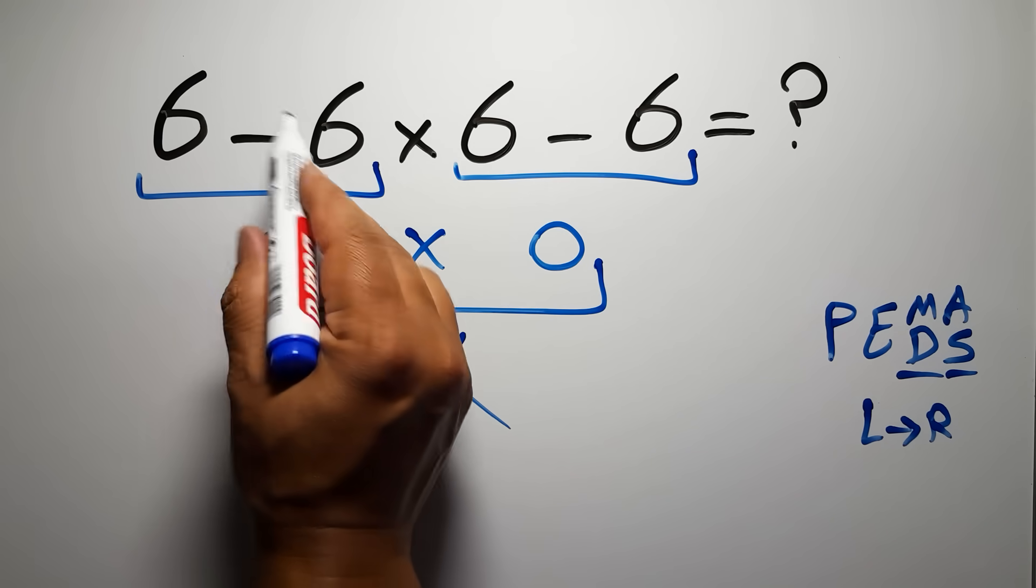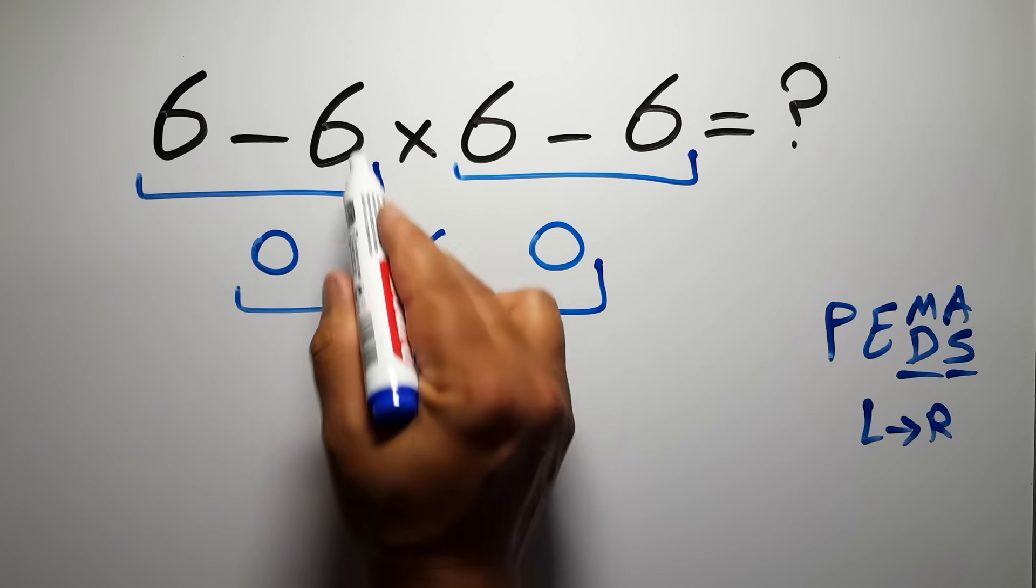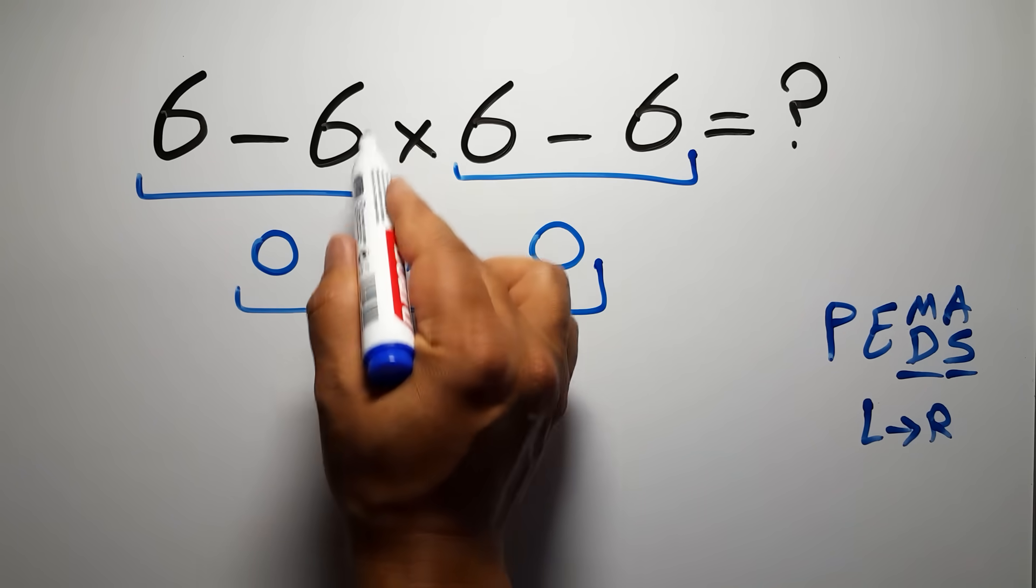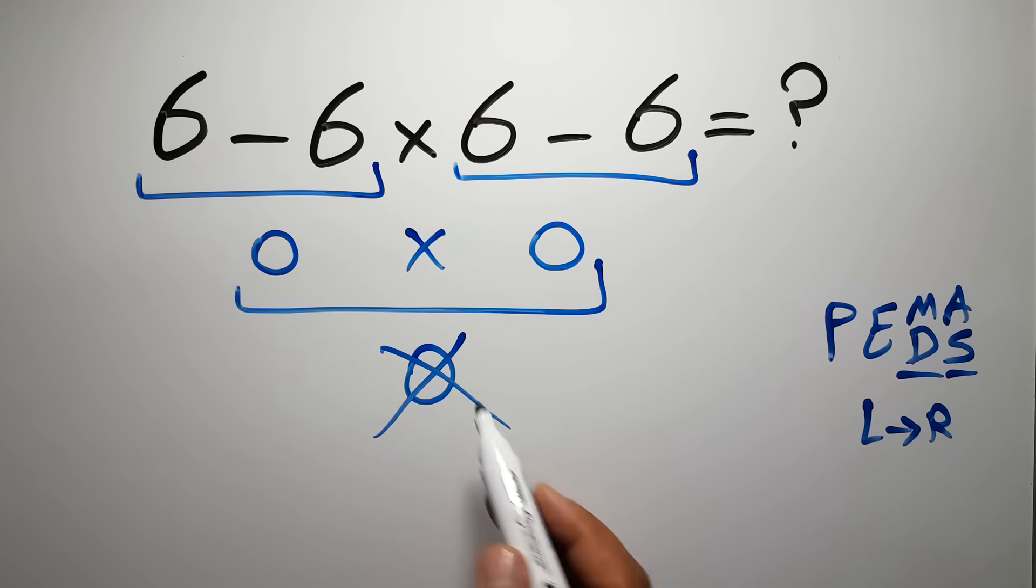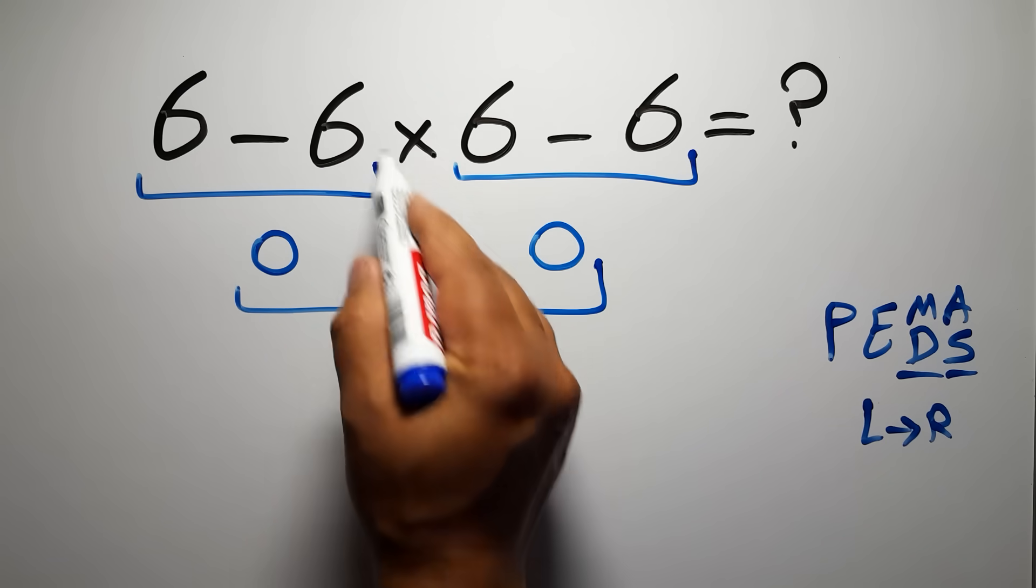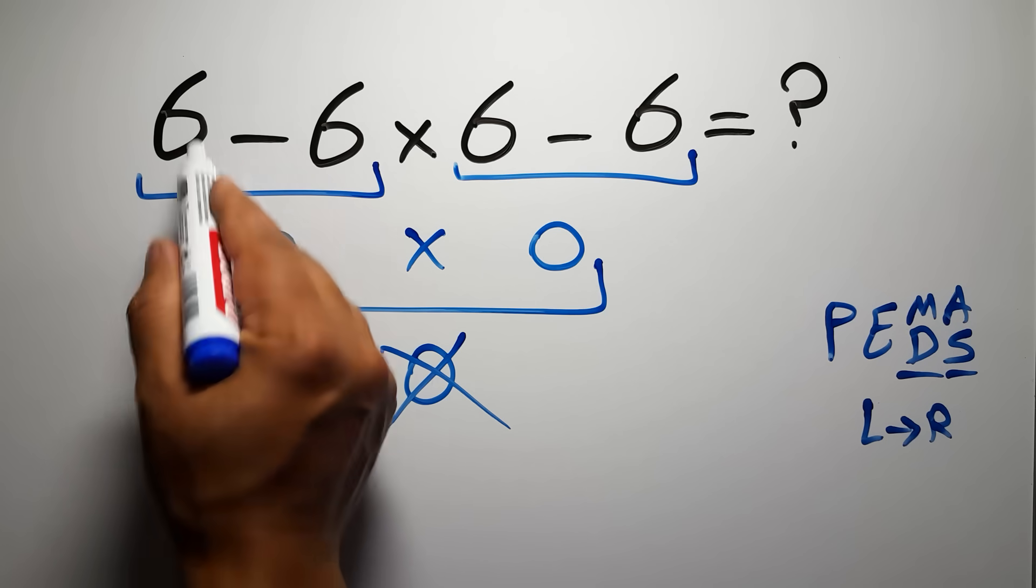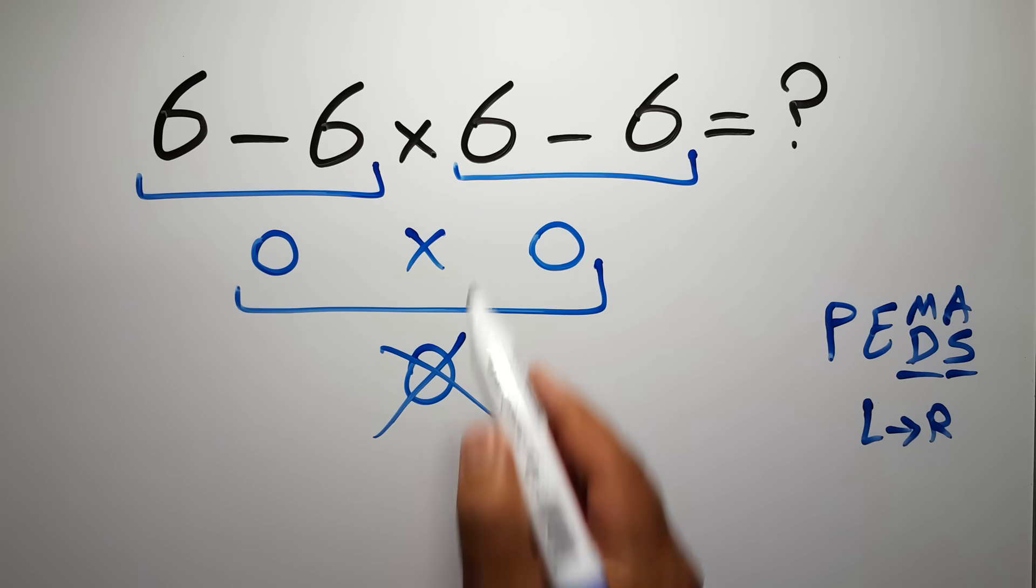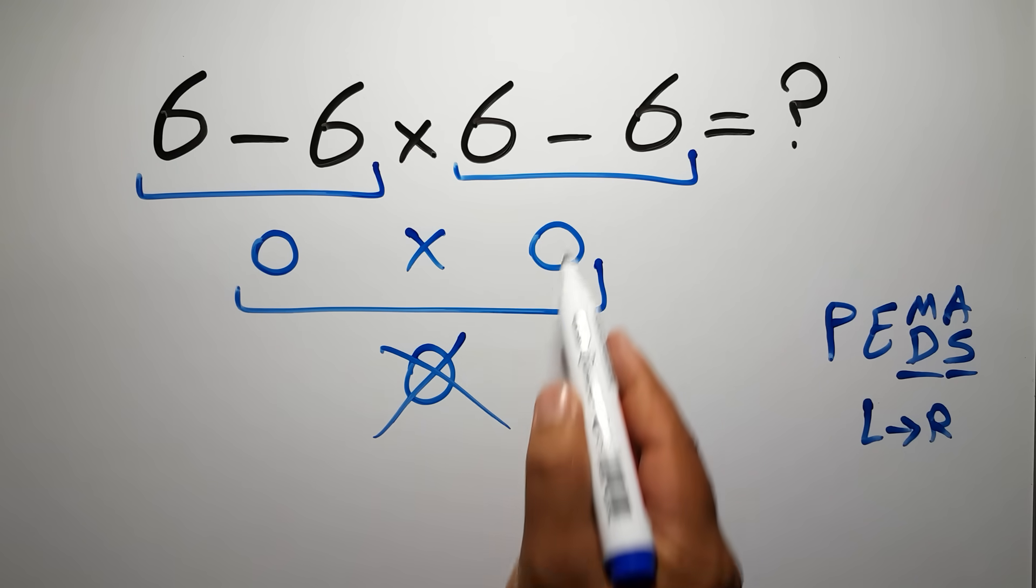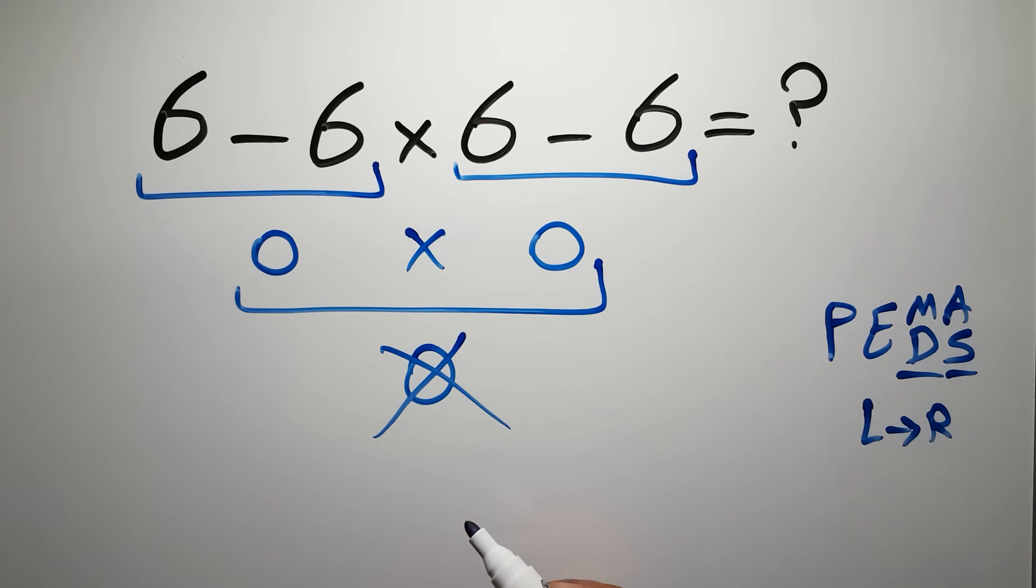In this expression, we have two subtractions and one multiplication. According to the PEMDAS, first we have to do this multiplication, then we have to work from left to right. So first this multiplication, then this subtraction, and finally this subtraction. If you do this subtraction before this multiplication or this subtraction, it is wrong.